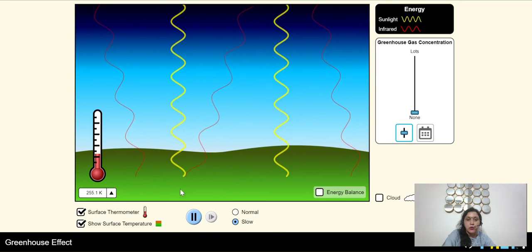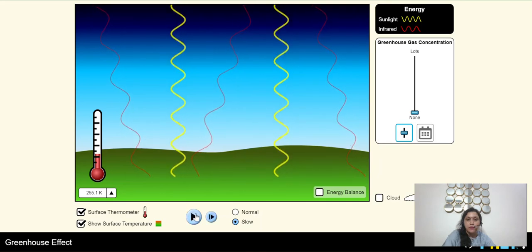Now, this is the tool which shows us the concentration of greenhouse gases. When we increase the concentration of greenhouse gases, what do we observe?